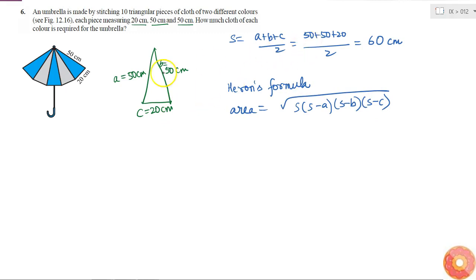So if I put the values of A, B, C and S, then I will get it as square root over 60 into 60-50 into 60-50 into 60-20.